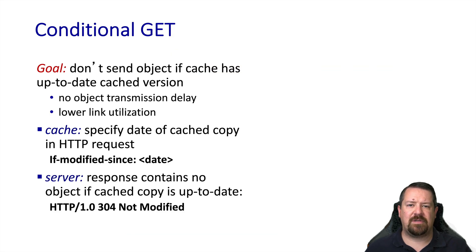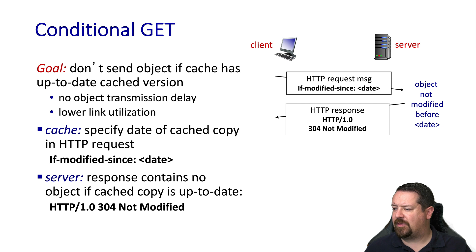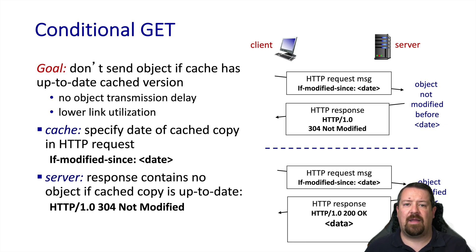One more feature of the protocol that helps caches function is the conditional GET. When the cache receives a request for an object, it may want to check if there's a newer version on the origin server. The conditional GET allows the cache to specify the last known date when the object was updated and tells the server to only send the object if a newer version is available. If there's no newer version, the server sends back a status code indicating the object has not been modified since the date specified by the cache — without sending the object body. If the object has subsequently been modified and the client sends another conditional GET, the response will include both the 200 OK status and the object requested.